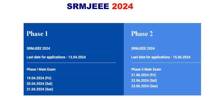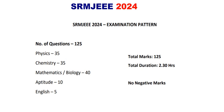Phase 2 exam dates are 21st, 22nd, and 23rd June. The question pattern consists of 125 questions with no negative marking and a duration of 2.5 hours. Physics has 35 questions, Chemistry has 35 questions, and there is Math or Biology depending on whether you are MPC or BPC. Aptitude has 10 questions and English has 5 questions.